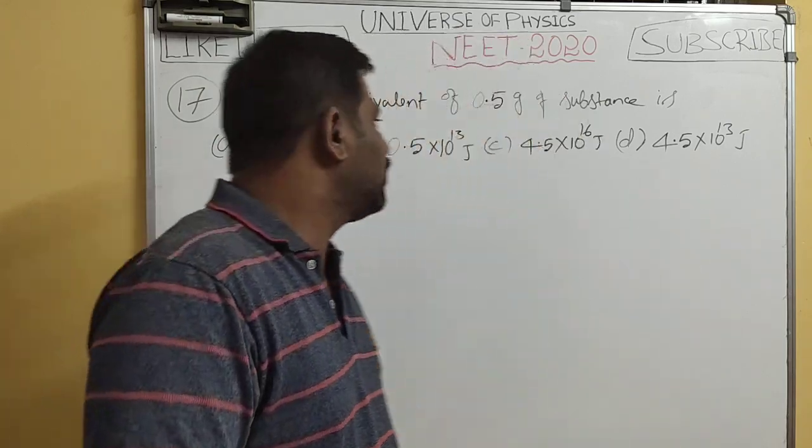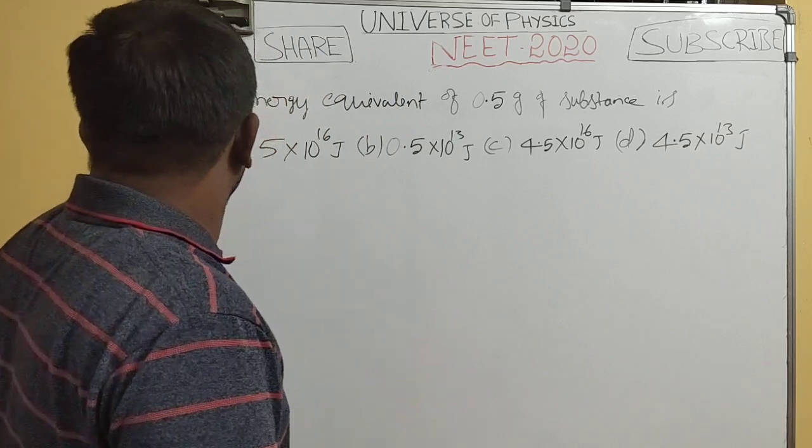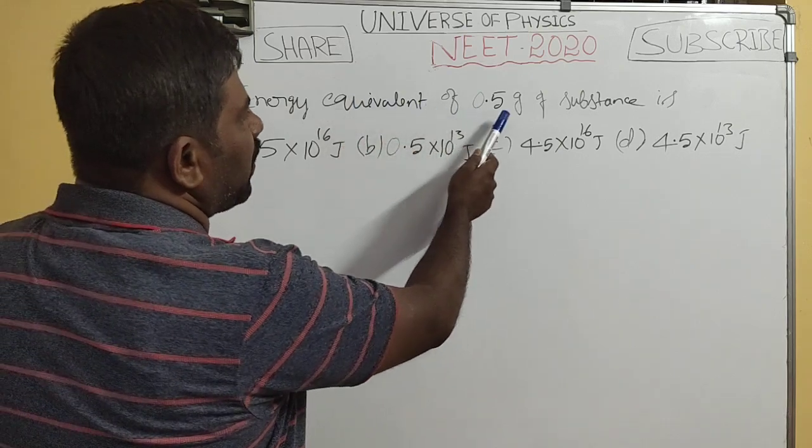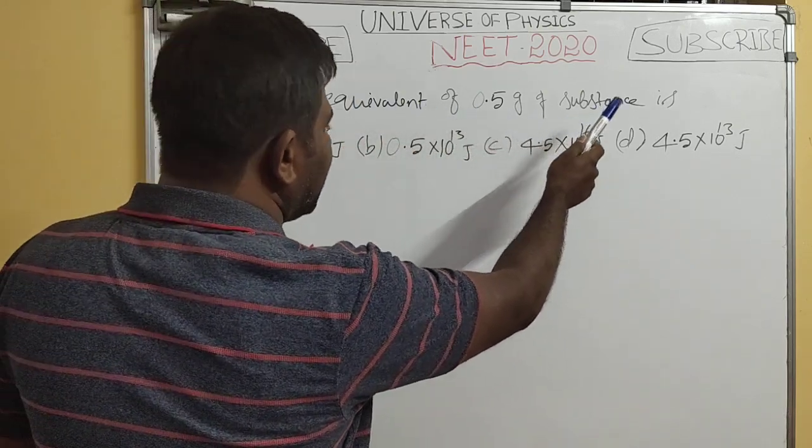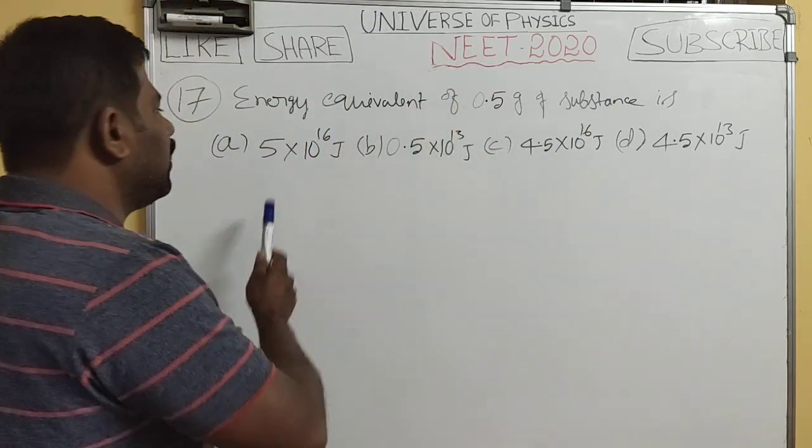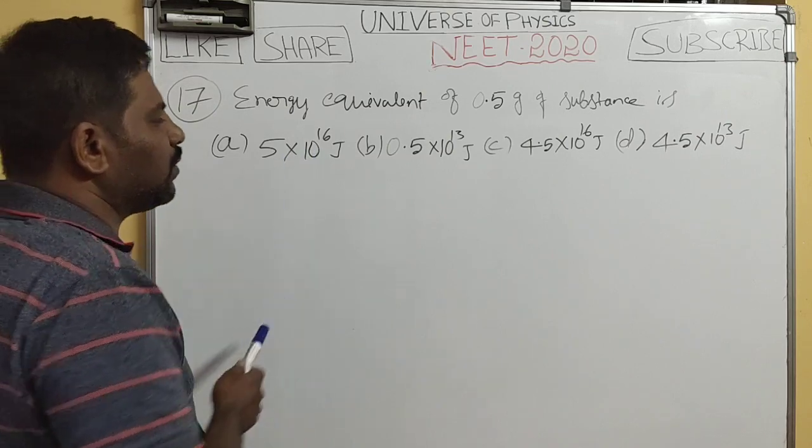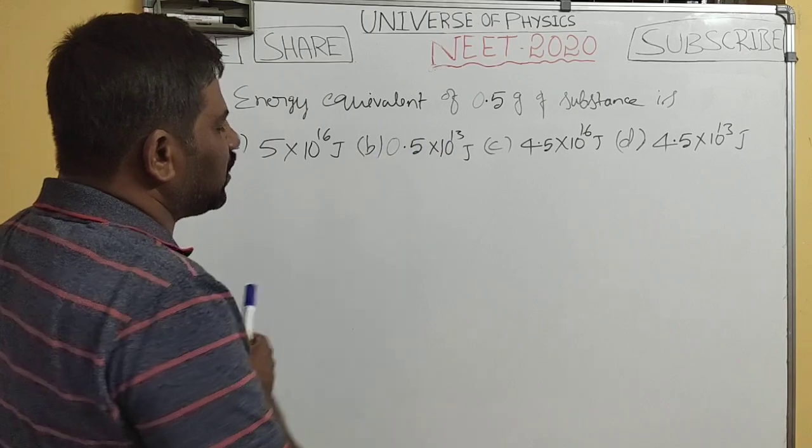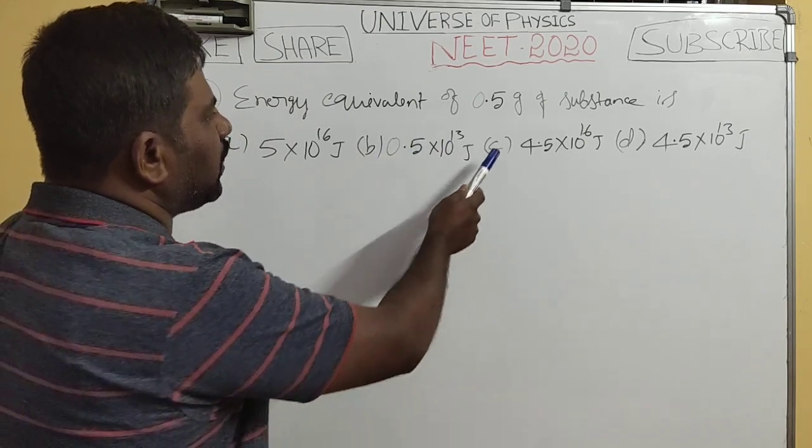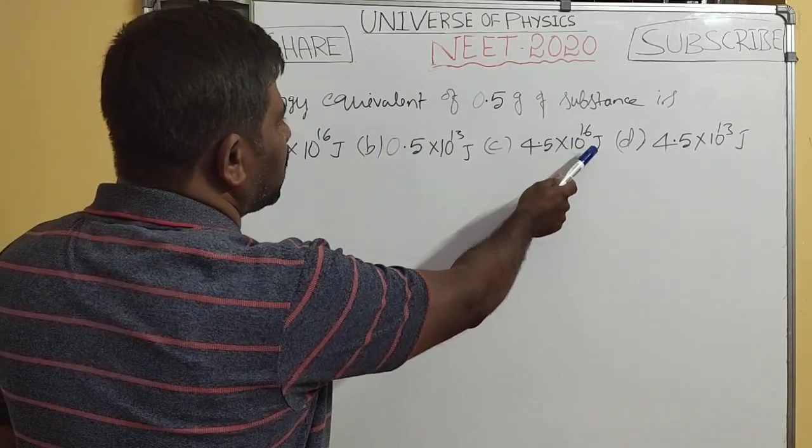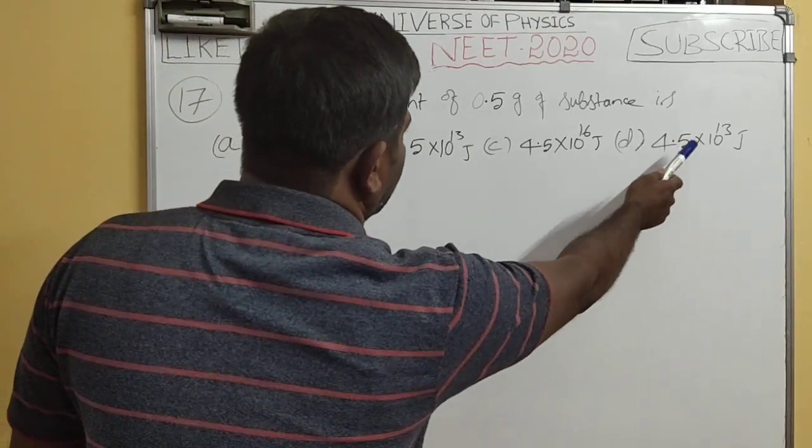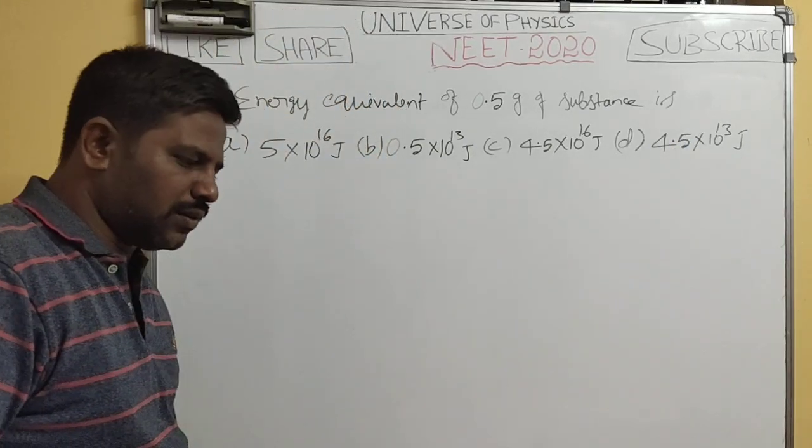Let's consider question 17: the energy equivalent of 0.5 grams of substance. Option A: 5×10^16 joules. Option B: 0.5×10^13 joules. Option C: 4.5×10^16 joules. Option D: 4.5×10^13 joules.